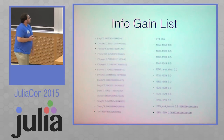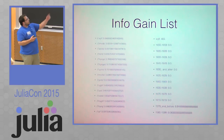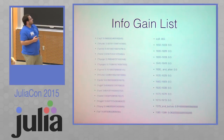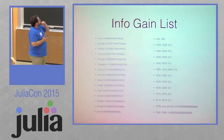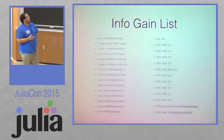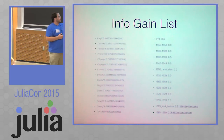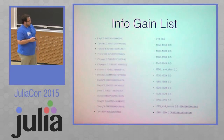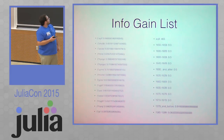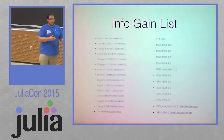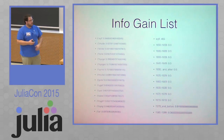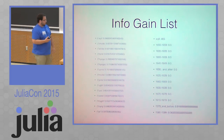Here's our information gain list. We have 12 classifications of decades between 1579 and before, up to 1690 and after. The word that has the most information is 'will,' spelled with a Y. The reason is it almost always occurs in that first 1579 and before category. Looking at other words, we have 'should,' 'would,' 'hurt,' 'thing' — all these words are spelled with I replaced by Y, and a lot of them have E's at the end. This really went out of favor in the 1600s. So those words have a lot of time signal inside of them.